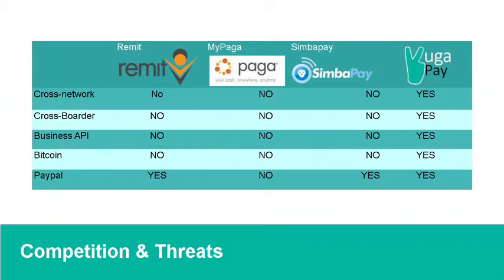Our competition includes other vendors providing cross-network and cross-border mobile money solutions — SimbaPay, Remit Uganda, and MyPaga in Nigeria. But their services are limited to the same network and the regions they operate in. Our competitive advantage is that our service can work anywhere where there's mobile money, and our infrastructure is not limited to hardware or any API from any provider. Our marketing strategy relies on two apps on Google Play Store with about 1,000 to 2,000 active users, and our main goal is to convert these into paying VugaPay users. We also have a Facebook community with about 17,000 active members, which is our main marketing source.